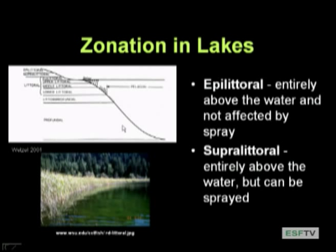In lake zonation, taking a cross-section through the shoreline, the epilitoral zone — 'epi' means upper — is entirely above the littoral zone, not really affected by the water, just the dry shoreline. Then we have the supralittoral zone: entirely above the water, but if there are storms and waves it can get sprayed, making it wetter than the epilitoral. You get different kinds of vegetation there that tolerate or require that extra water.